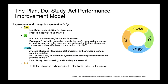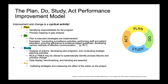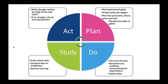The PDSA — Plan, Do, Study, Act — performance improvement model: improvement and change is a cyclical activity. Plan — identifying responsibilities for the program, process mapping, or gap analysis. Do — the plan is executed, strategies are implemented: conducting surveillance activities, performing staff and patient education, ensuring adherence to evidence-based guidelines, developing various methods of effective communication. Study — analysis of those actions, developing pilot programs, and conducting strategic planning activities; root cause analysis or FMEA may be utilized to systematically identify process failures and prioritize change; data display, benchmarking, and trending are essential. Act — instituting strategies and measuring the effect of the action on the project. Then you just do that all over and over again.